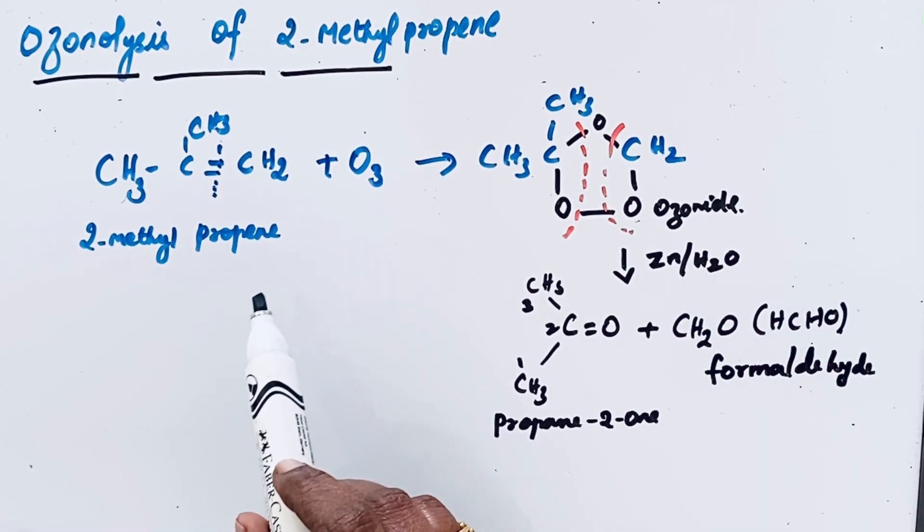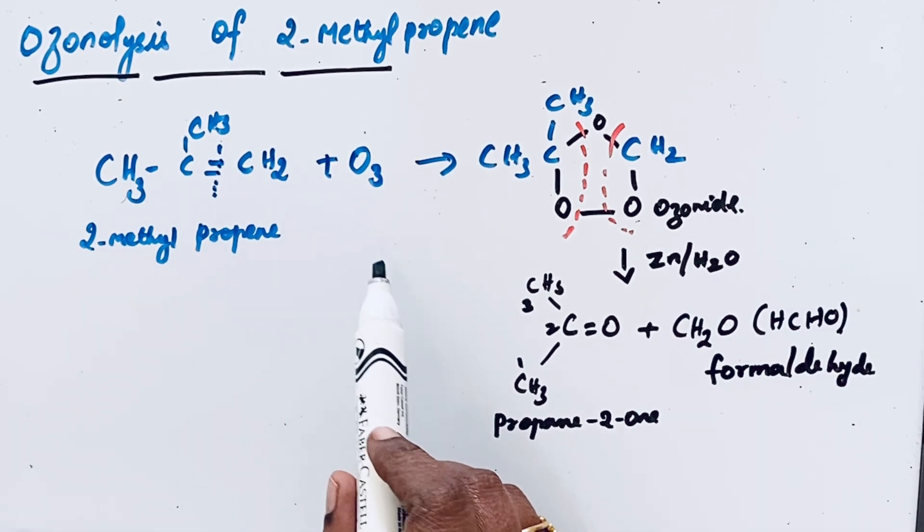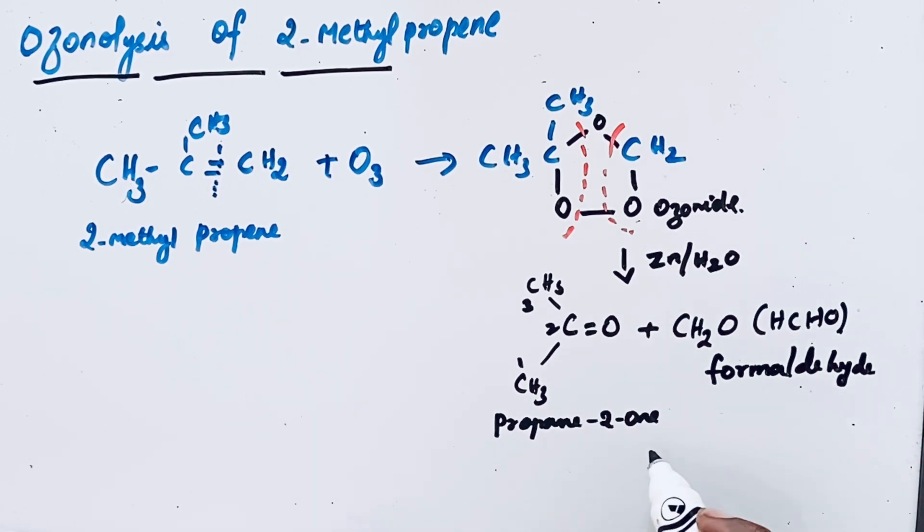2-methylpropene undergoes ozonolysis. We get 1 ketone and 1 aldehyde molecule.